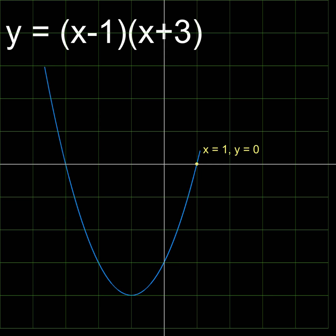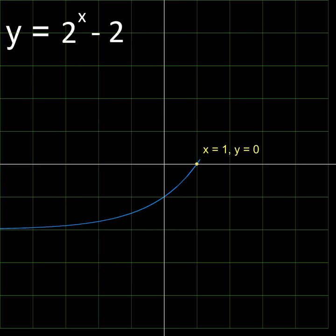As the relationship between y and x becomes more and more complex, it becomes harder to find an x where y equals 0. Let's say we wanted to find the 0 of this parabola.